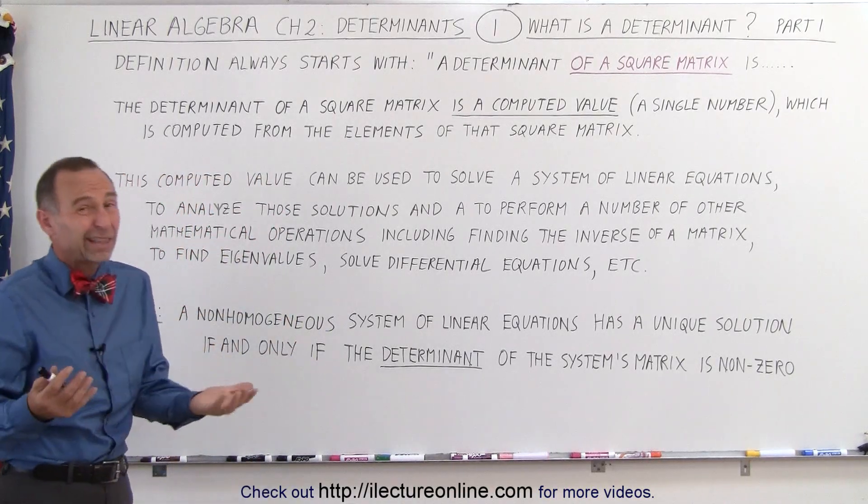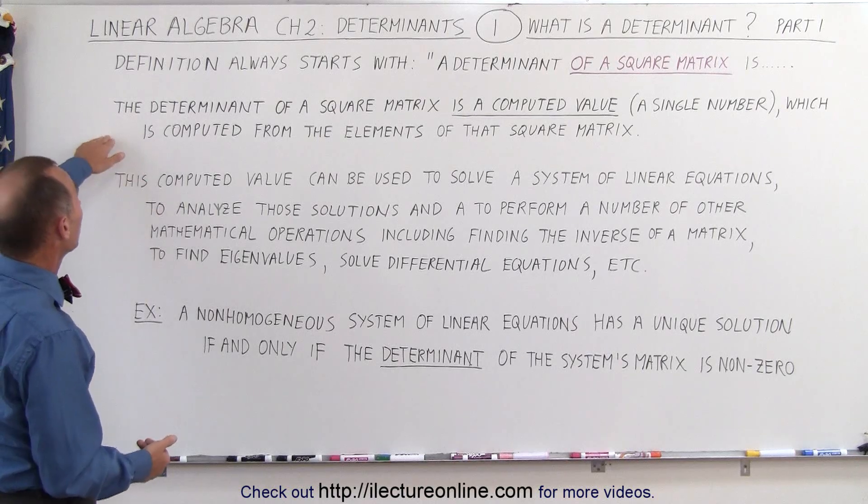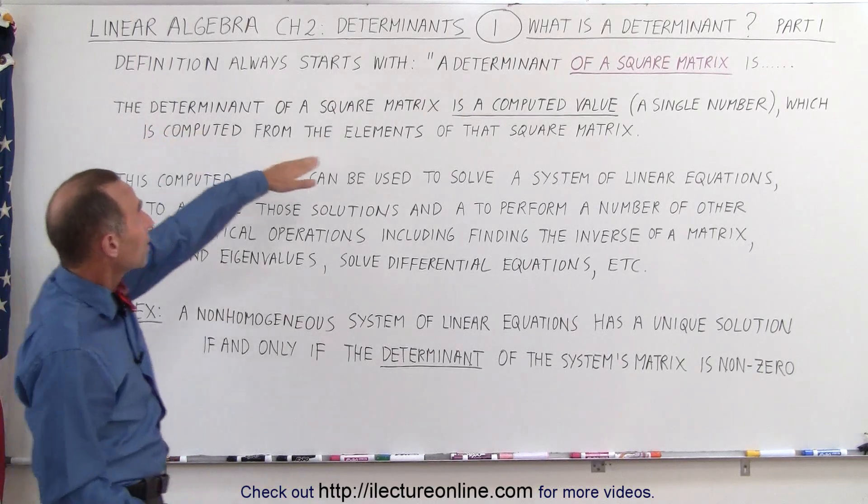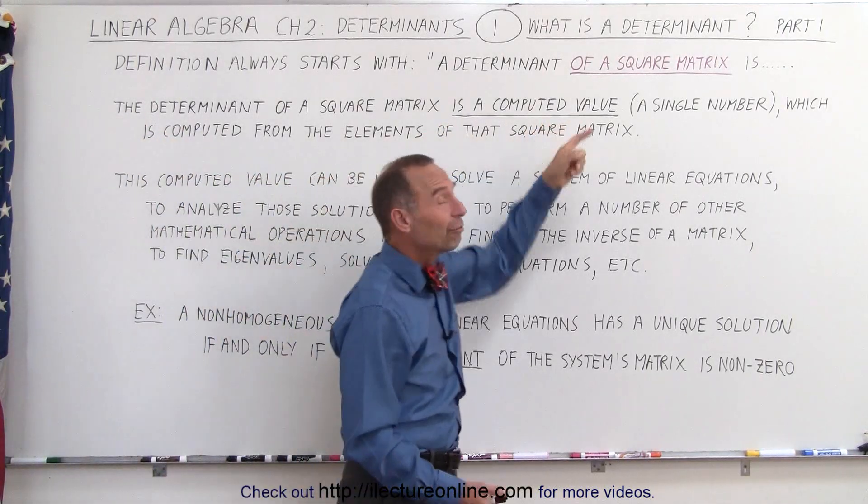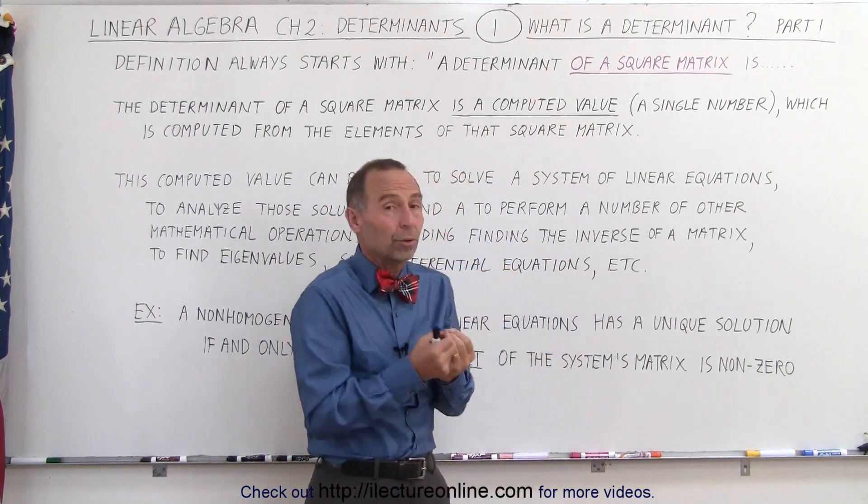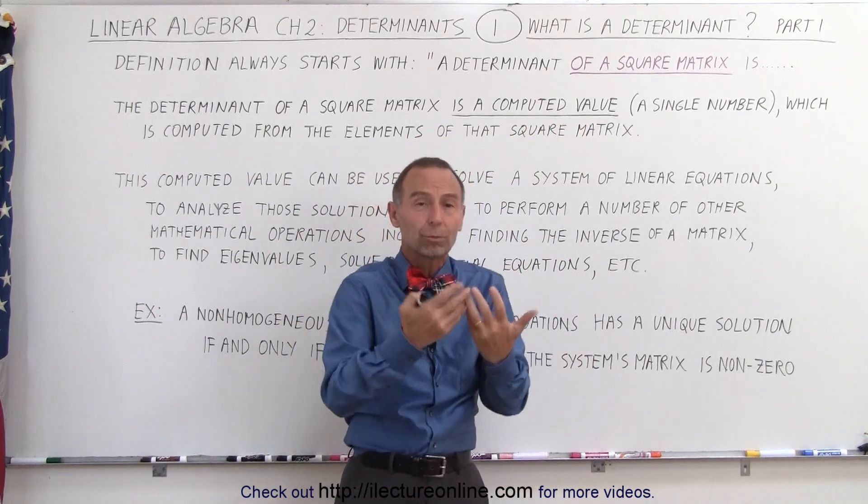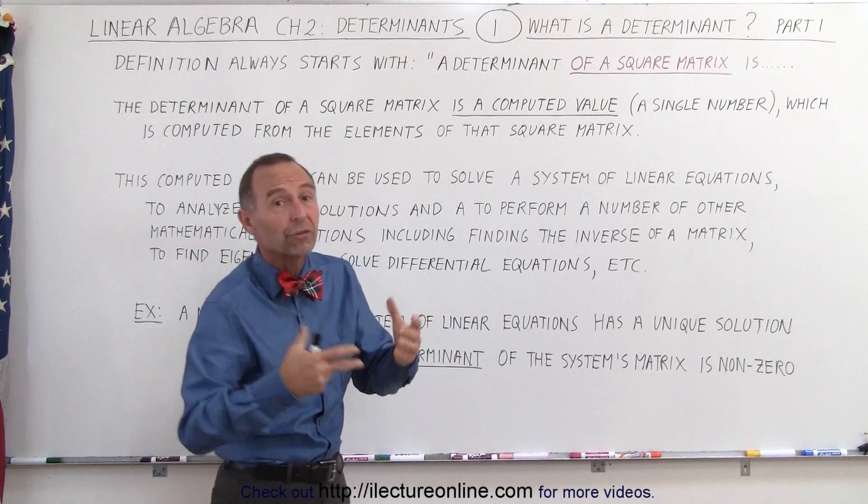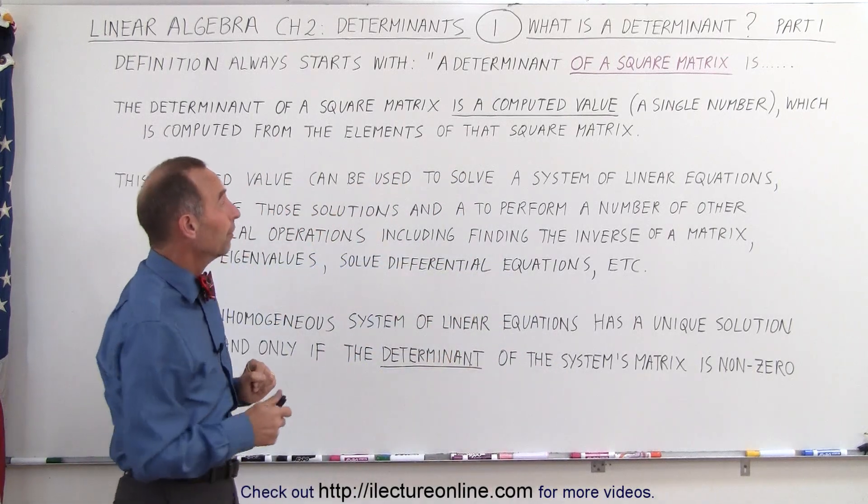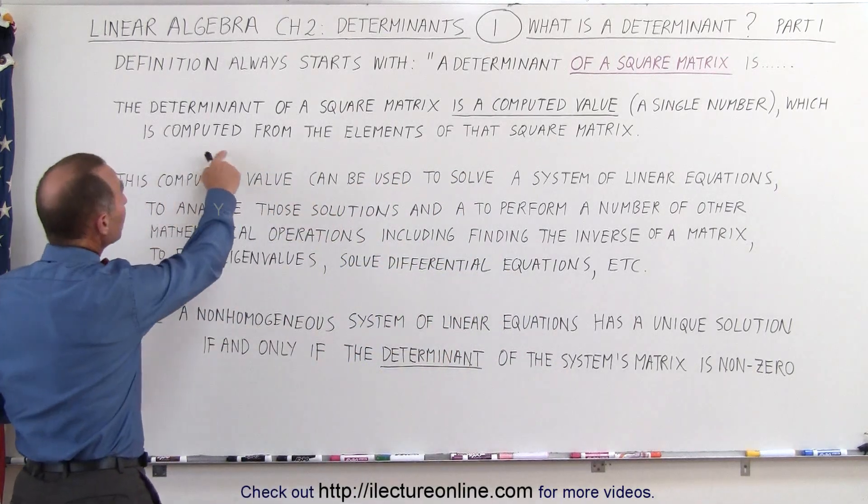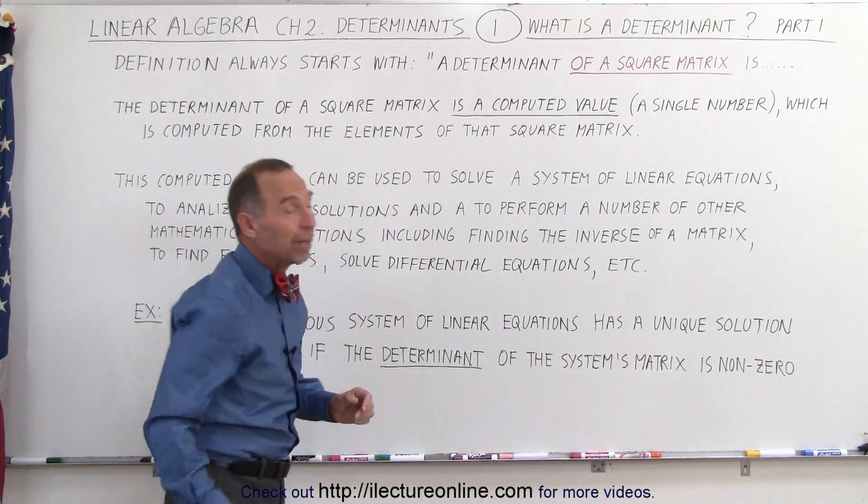So here is what I think is my definition of a determinant. The determinant of a square matrix is a computed value, a single number. So when you take a determinant or calculate a determinant of a square matrix, you end up with a single number, which is computed from the elements of that square matrix.